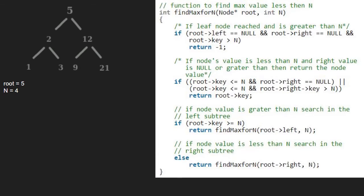As it is false, we go to the third if and check if root's key is greater than or equal to N. Since it is true, we call for the left child of 5, which is 2, using a call stack.